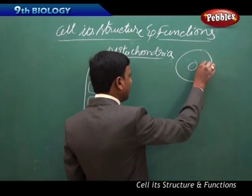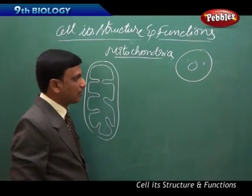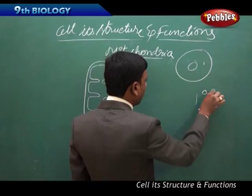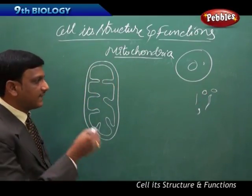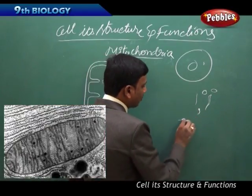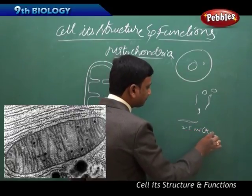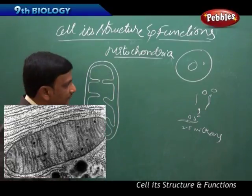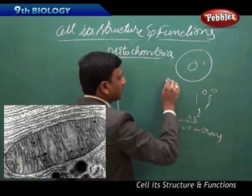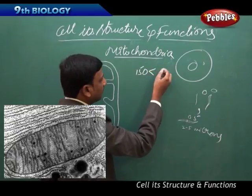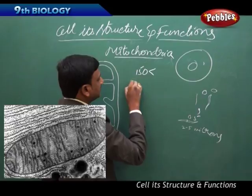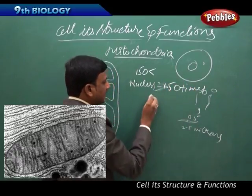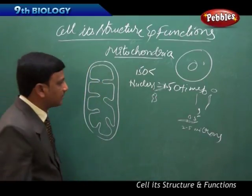Cellular respiration takes place in the mitochondria, which are found in the cytoplasm of a cell. Mitochondria may be thread-like, spindle-like, comma-shaped, round, or oval — they exist in different shapes and are very small. The length of a mitochondrion is around 2 to 5 microns and the width around 0.5 microns. Mitochondria are 150 times smaller than the nucleus.